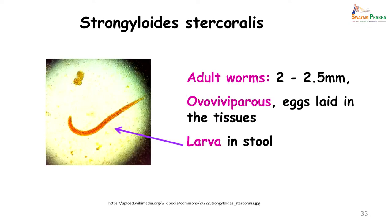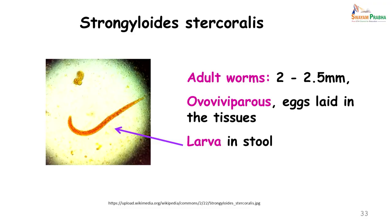Strongyloides stercoralis: the adult worm is only 2 to 2.5 millimeters in length. It lies in the cecum and the large intestine, and usually the adult worm is not seen unless someone has done a colonoscopy. This worm is ovoviviparous — as soon as eggs are laid they immediately hatch into larval form — and this is the only nematode in which we find larval forms in the stool. You will never find the ova of Strongyloides stercoralis.